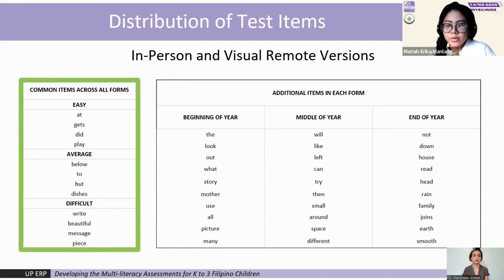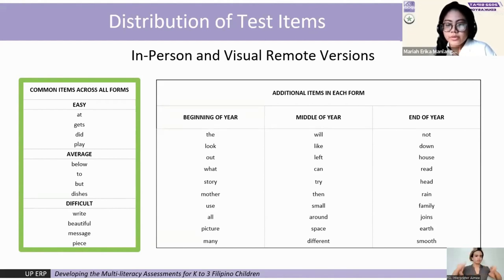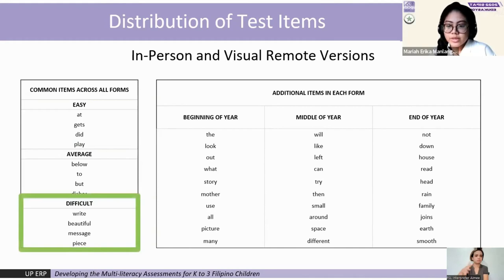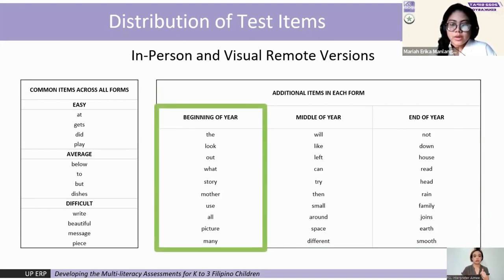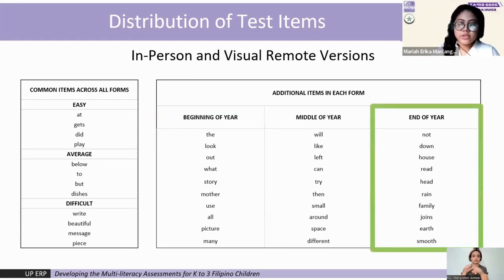This shows that all items in our test are the same words that children are exposed to in school. All three forms have a list of common words, which could be used to gauge learning of prospective respondents throughout the whole year. Common words included were of varying difficulty, with a set number of easy, average, and difficult items based on the item ranking. The remaining words were distributed across the three forms in order of their total frequencies in Sukatwika. The word with the highest frequency was placed in the beginning-of-year form, while the word with the lowest frequency was placed in the end-of-year form.